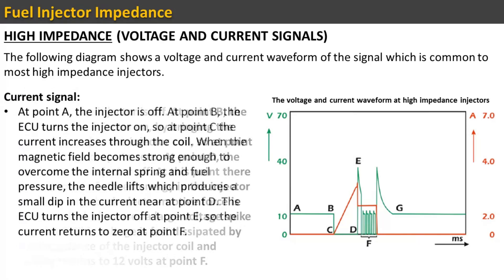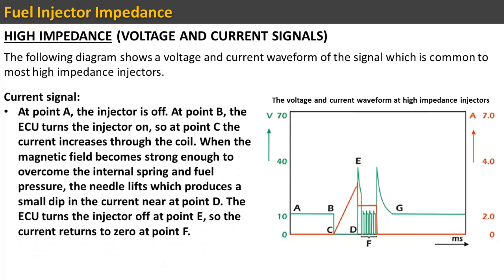Current signal for high impedance injectors: At point A the injector is off. At point B the ECU turns the injector on, so at point C the current increases through the coil. When the magnetic field becomes strong enough to overcome the internal spring and fuel pressure, the needle lifts, which produces a small dip in the current near point D. The ECU turns the injector off at point E, so the current returns to 0 at point F.